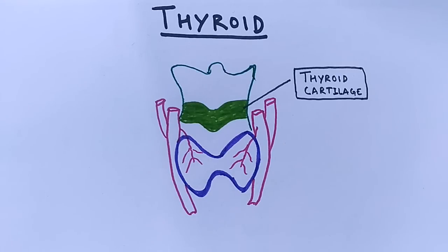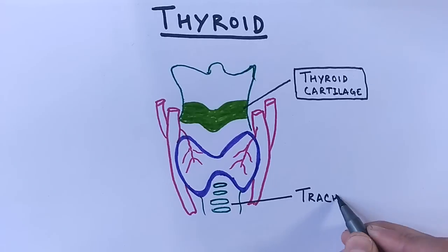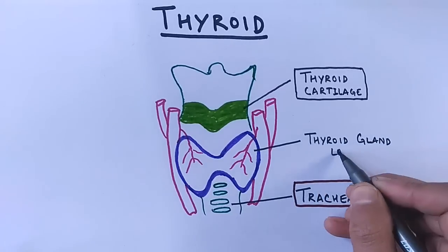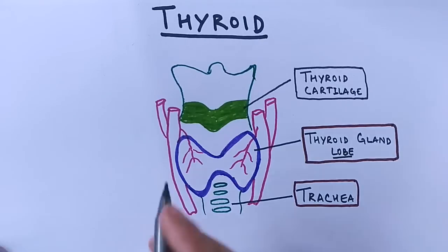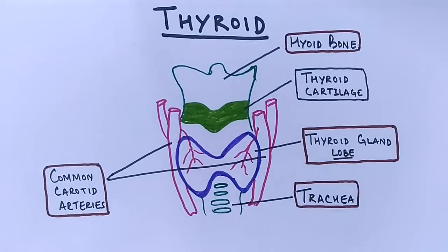The gland is further supported by the thyroid cartilage, which is present on the hyoid bone. Being an endocrine gland, it relies on signals from the pituitary gland. It is located in the front of the neck, below the Adam's apple. The thyroid gland also receives nerve supply from the autonomic nervous system — from both the sympathetic nervous system (via the superior, middle, and inferior cervical sympathetic ganglia) and the parasympathetic nervous system (via the vagus nerve).